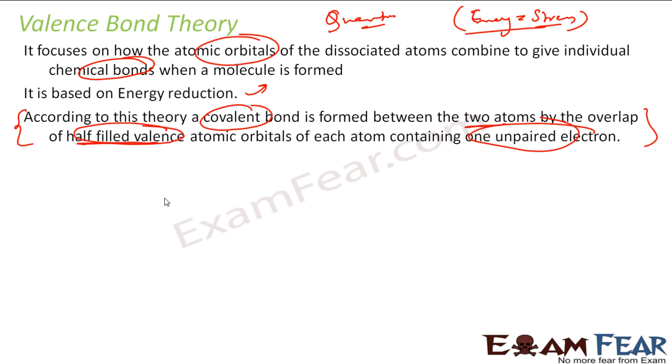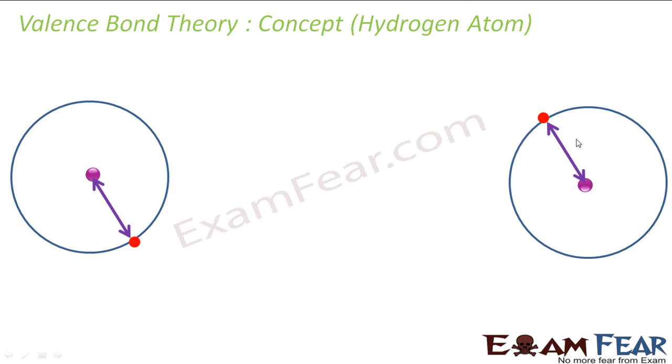I will explain more on this. In the next few slides, if you do not understand, let's take an example. I have one s orbital. Let us understand the valence bond concept for the hydrogen atom. We will take two hydrogen atoms.